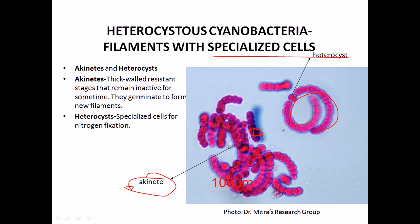The second specialized cell type is the heterocyst. While other filamentous cells are cylindrical, the heterocyst is spherical. This change in cell structure is notable — heterocysts are destined to perform specialized work, specifically fixing nitrogen.